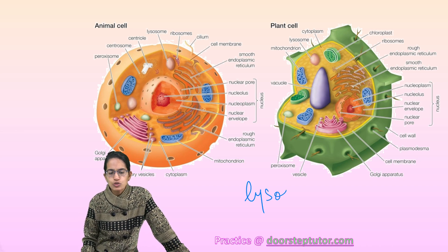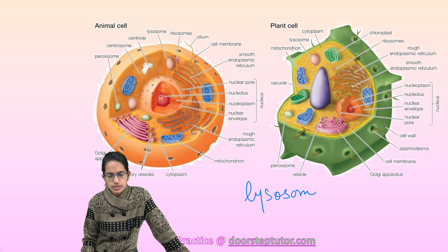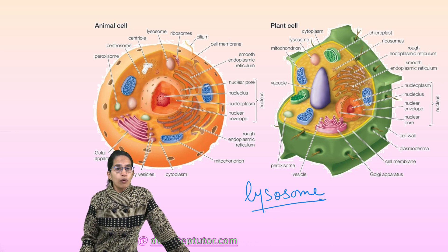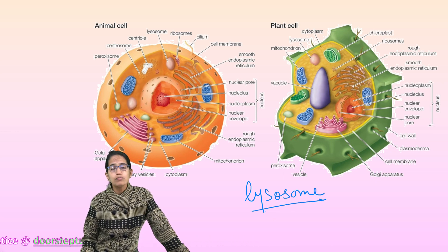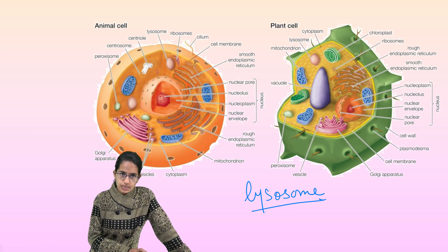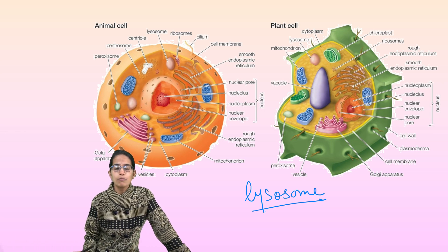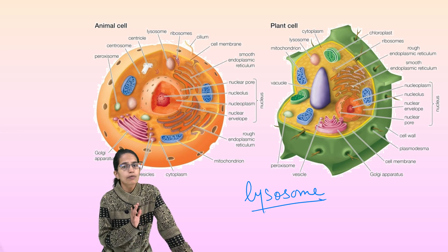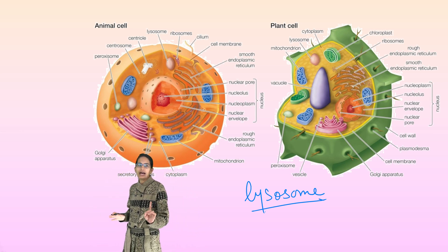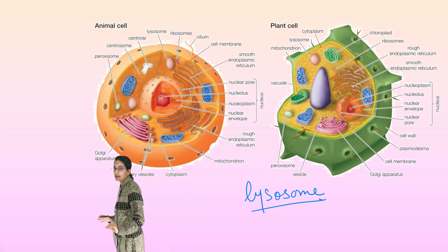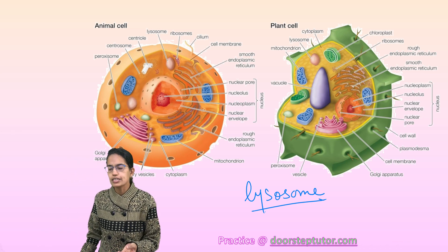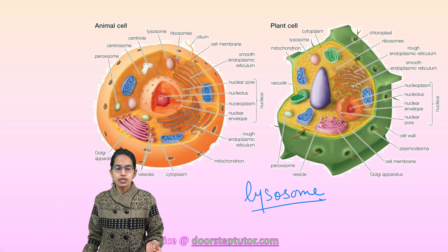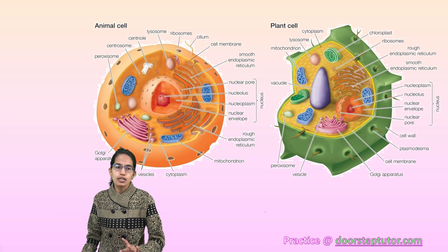Single membrane organelle: lysosome is a good example. Organelles with no membrane: ribosome, centrosome, and centrioles — centrosomes are seen only in animal cells, very important. Lysosome has a single membrane. Mitochondria, endoplasmic reticulum, plastids, vacuole, and Golgi bodies are double membrane organelles.